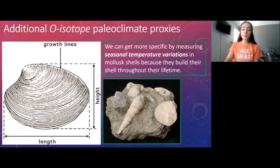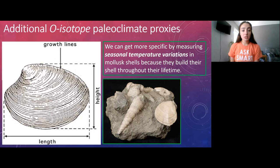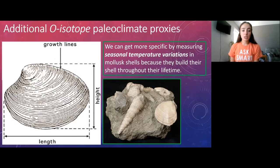We can become even more specific with mollusks because they grow their shells seasonally — they have seasonal or annual layers, just like tree rings. This allows us to measure temperature variations not only for a specific time period in Earth's history, but also the seasons of that time period, showing how drastic seasonal changes were in the environment that mollusk was living in.